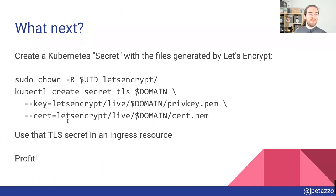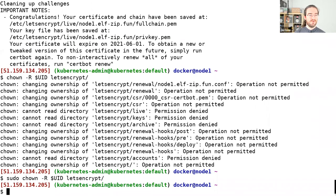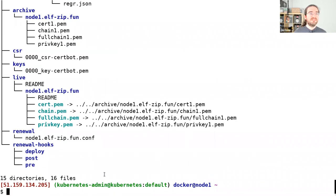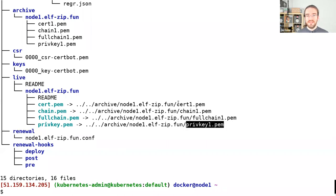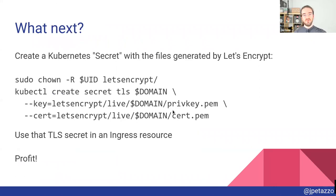What do we do with that now? My certificates are right there — the private key here and the certificate there. And then I can transform these into a Kubernetes secret, which is a Kubernetes object we can use further down the road.